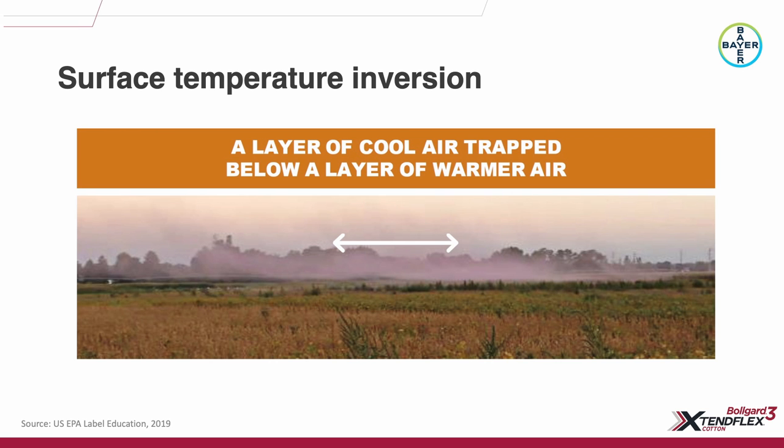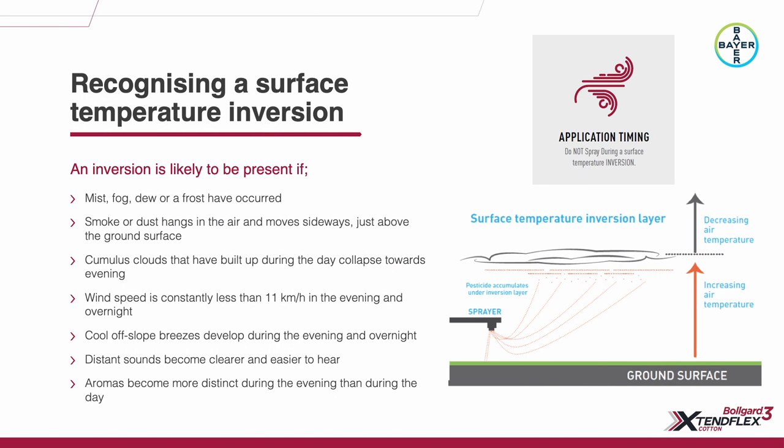The strength of the inversion is determined by the presence or absence of breeze. This is why on your product labels you have requirements, on some products, for minimum and maximum wind speed limits. To prevent a surface temperature inversion forming in the evening, you need at least 11 km/h of breeze, which is not that common. Surface temperature inversions, if the wind stays still overnight, increase in strength until morning. It's not until about an hour and a half after sunrise, when the earth heats again, that the surface temperature inversion will decouple.